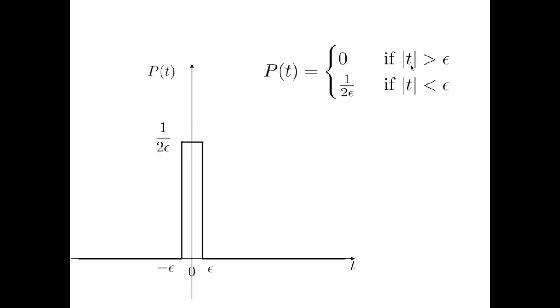This function is defined as follows. Whenever the argument, the independent variable, is smaller than a given parameter epsilon in absolute terms, the function is taking a constant value, 1 divided by 2 times epsilon. However, outside of this range, whenever the independent variable is larger than epsilon in absolute terms, the value of the function is zero everywhere else. There is an interval between minus epsilon to plus epsilon, where the function is piecewise constant, and the value that it takes is 1 divided by 2 times epsilon.